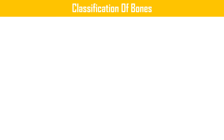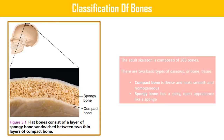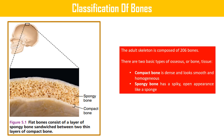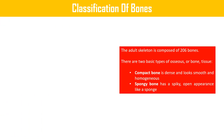Classification of bones: the adult skeleton is composed of 206 bones. There are two basic types of osseous or bone tissue: compact bone and spongy bone. Compact bone is dense and looks smooth and homogeneous; spongy bone has a spiky, open appearance like a sponge. In flat bones, a layer of spongy bone is sandwiched between two thin layers of compact bone.